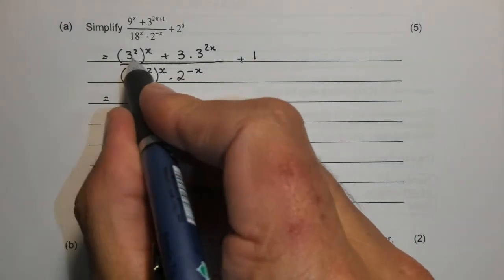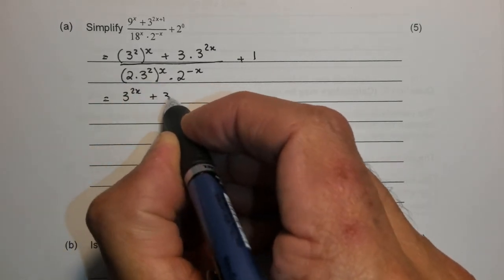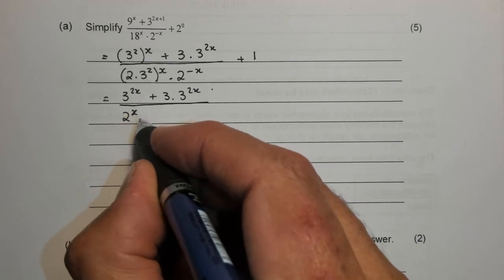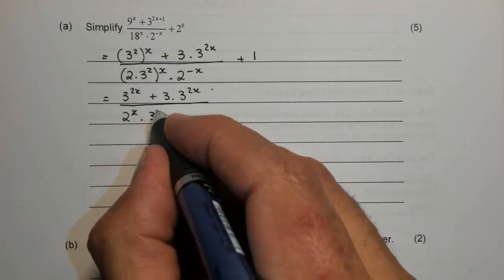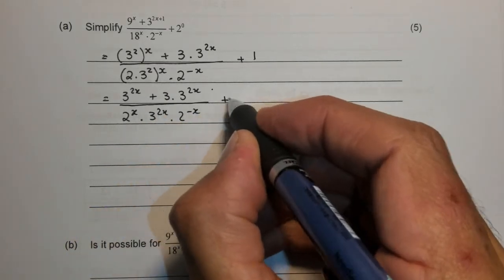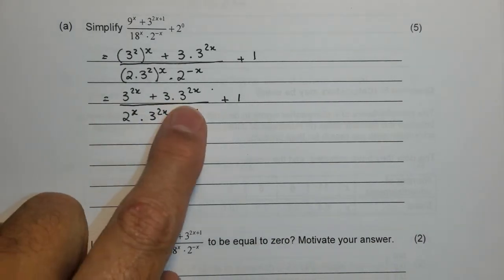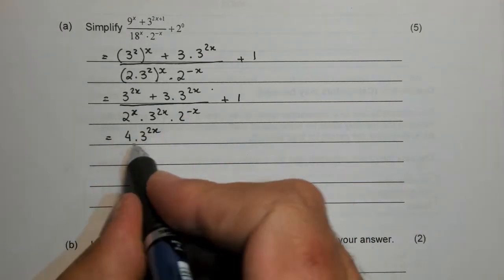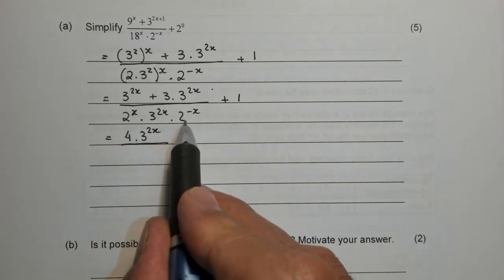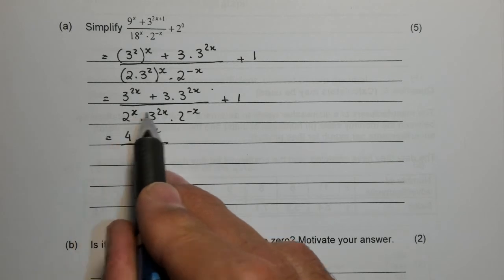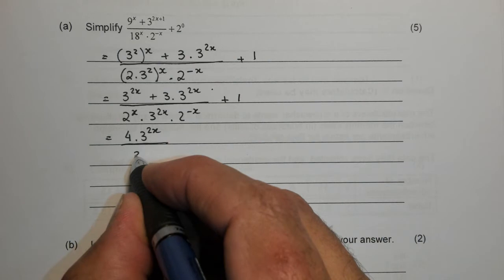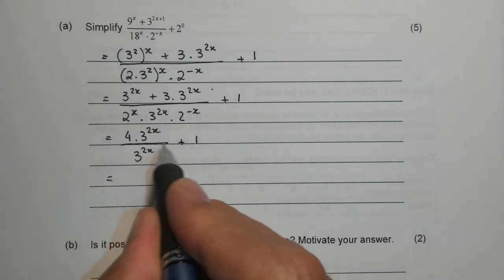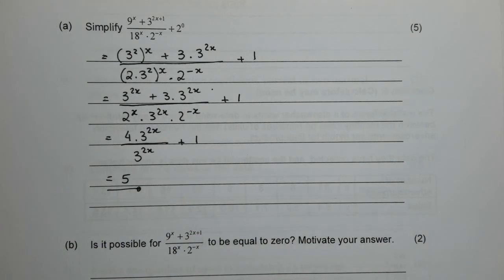Now we can distribute. We have 3 to the 2x plus 3 times 3 to the 2x in the denominator, we have 2 to the x times 3 to the 2x times 2 to the minus x plus 1. If I add the two top ones together I'm going to get 4 of those 3 to the 2x's. The denominator, the 2 to the x multiplied by the 2 to the minus x, if I multiply like bases I add their powers so it's 2 to the 0 which is 1. I'm left with 3 to the 2x and that plus 1 tags along. Those two are going to cancel out. I've got 4 over 1 plus 1, and that gives me a result of 5.